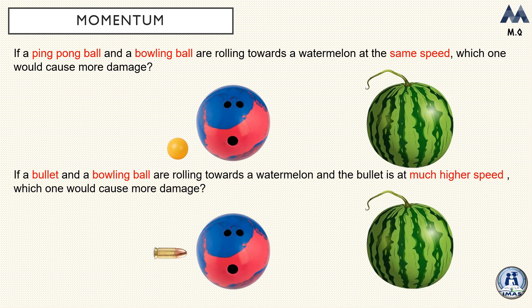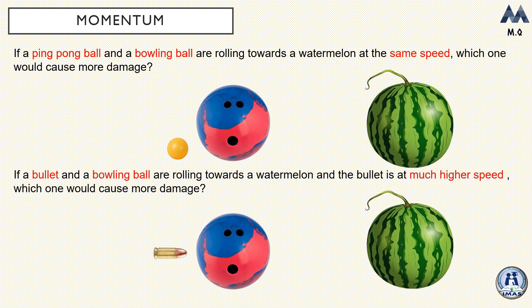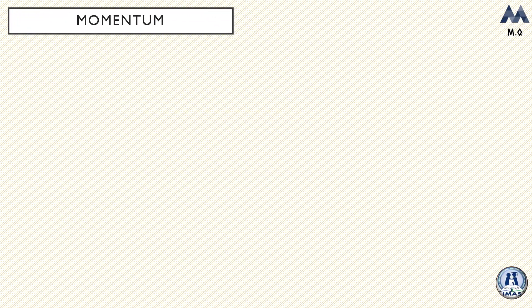Now consider a similar example: a bullet and a bowling ball are rolling towards the same watermelon, but the bullet is moving at a much higher speed. Which one would cause more damage? This time you would probably guess the bullet. So what is the standard — is it decided based on mass or based on velocity? That's where the term momentum comes in handy.